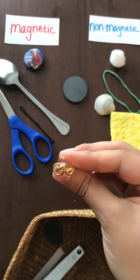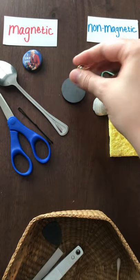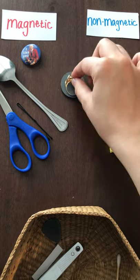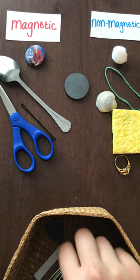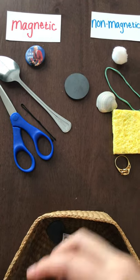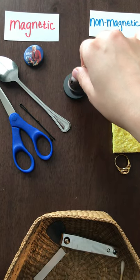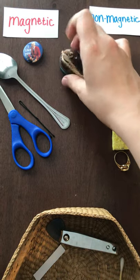I have a ring. Do you think it's magnetic or non-magnetic? Let's see. It's non-magnetic. Let's do the bell. I have a bell. Let's see if it's magnetic. It's magnetic. It's sticking to the magnet.